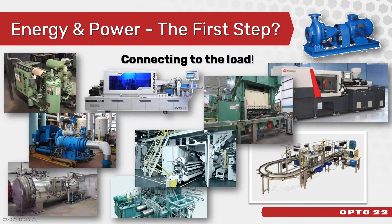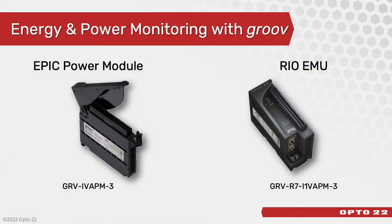So there you have it — monitoring energy and power. The first step is connecting to the load. We've got two energy and power monitoring products. The first is the EPIC power module, which is part of the Groove EPIC system — our edge programmable industrial controller. It slides into the EPIC backplane just like any other IO module. The other is the RIO EMU, which can be remote IO to another control system or can stand alone without the need for a PLC.